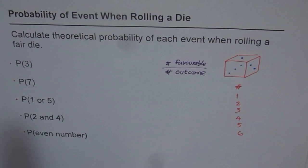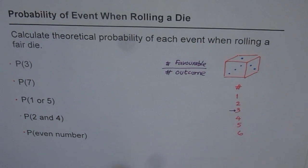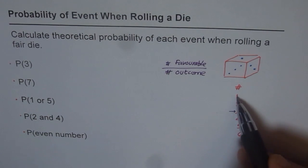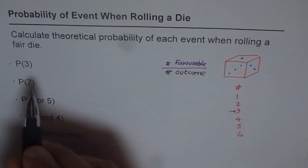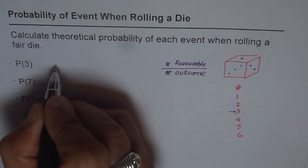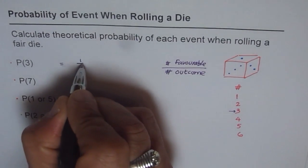Favorable outcomes means what we really want. So in the first case, we want number 3. How many number 3s are here? Just 1. So the favorable outcomes is just one number, which is number 3. And what are all the possible outcomes? All the possible outcomes are 6. So the probability of getting 3 will be 1 out of 6.